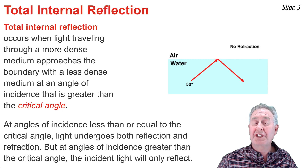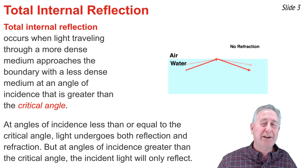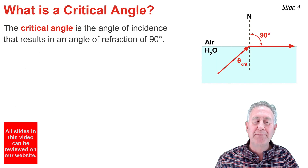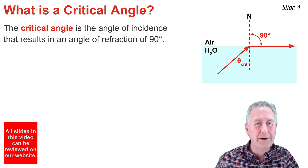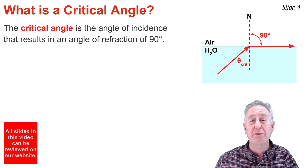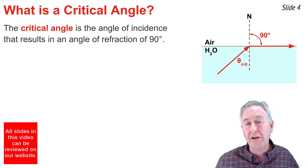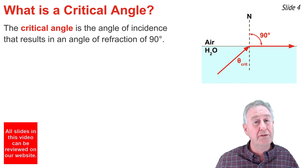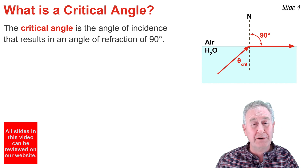For any angle of incidence less than or equal to the critical angle, you'll get reflection and refraction. Now, what is a critical angle? The critical angle is a numerical value for the angle of incidence — specifically, the angle of incidence that causes the light ray to refract along the boundary line at an angle of refraction of 90 degrees.